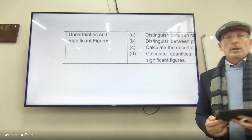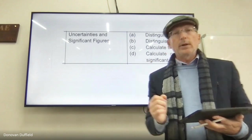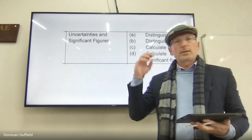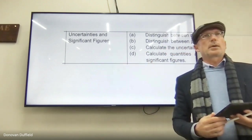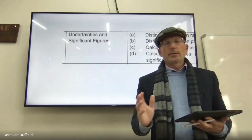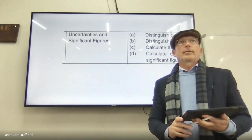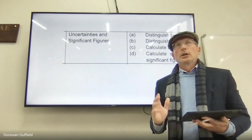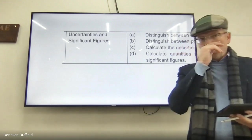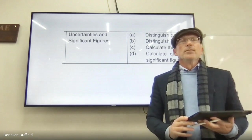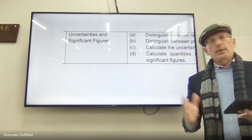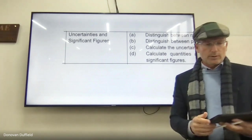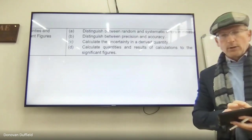This is extremely important in experimental physics because every measurement — whether done at the Large Hadron Collider, where billions of euros have been spent to minimize uncertainty — there's always uncertainty. Heisenberg's uncertainty principle is one of the fundamental principles on which the universe seems to work. Uncertainty cannot be eliminated.